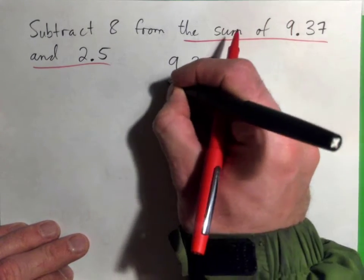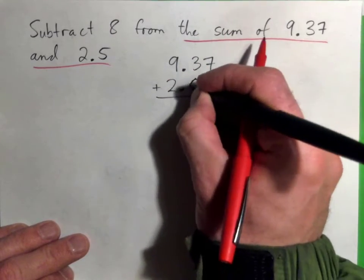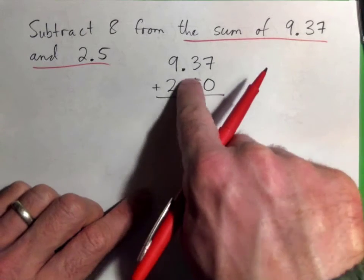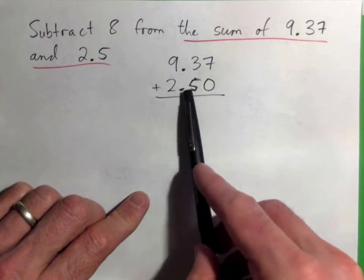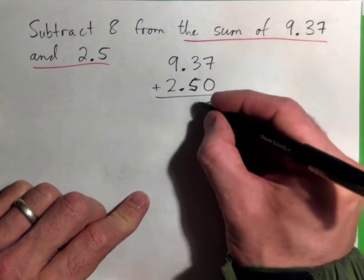9.37 plus 2.5. We're going to need to write that as 2.50. When you're adding decimals, the decimal point goes in line above each other like that. 7 plus 0 is 7, 3 plus 5 is 8, 9 plus 2 is 11. Now that is the sum of this and this, and so now our sentence actually becomes...